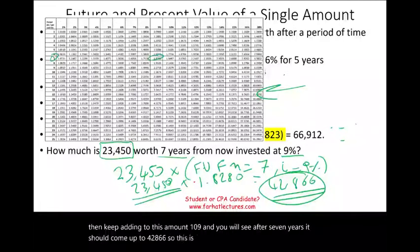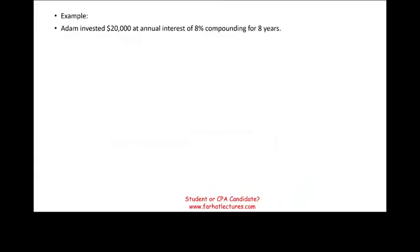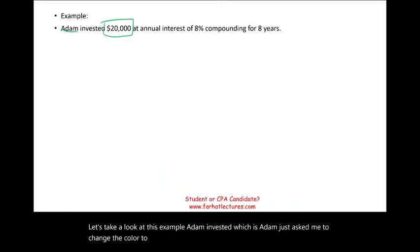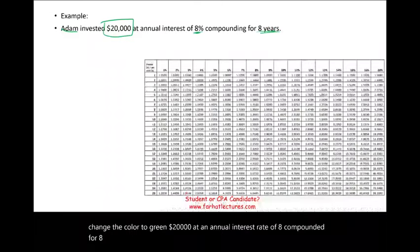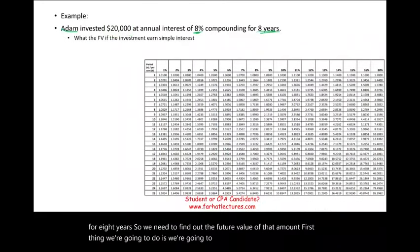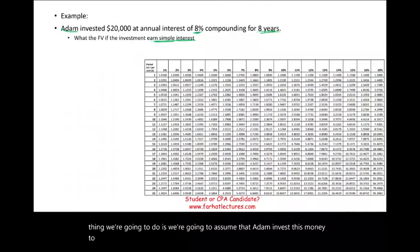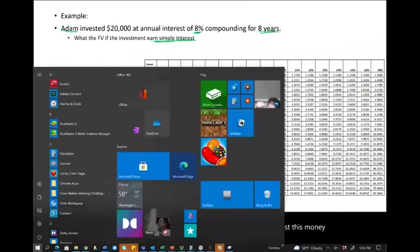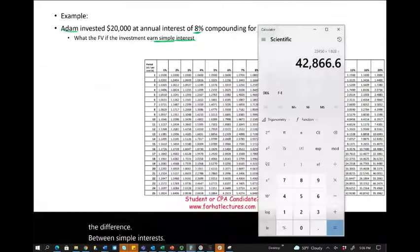Let's look at another example. Adam invested $20,000 at an annual interest rate of 8% compounded for eight years. We need to find the future value. First, let's assume Adam invests this money to earn simple interest, so we can understand the difference between simple interest and compound interest.